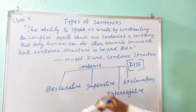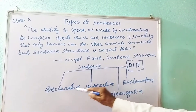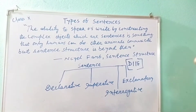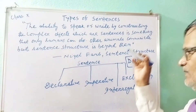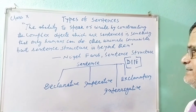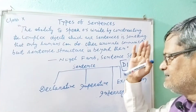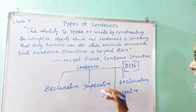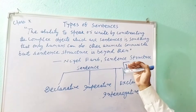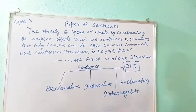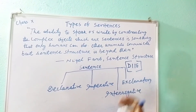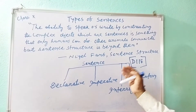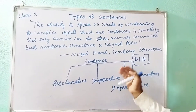Now, come to types of sentences. A declarative sentence is otherwise known as a statement. For example: 'I am happy.' Imperative: 'Go there,' 'Open the door,' 'Sit down,' 'Please open the door,' 'Kindly sit down.'